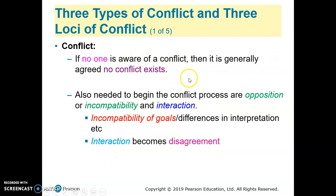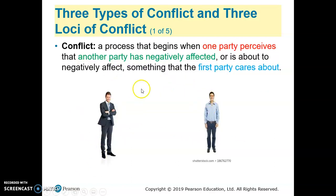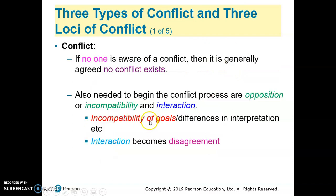If no one is aware of the conflict, then generally no conflict exists. Conflict also needs to begin with oppositions, that means incompatibility and interaction. Basically, conflict arises because of two elements: incompatibility and interactions.